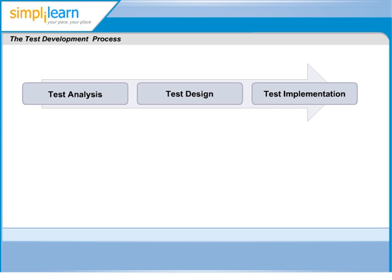Let us take a closer look at what activities are carried out in each phase of the test development process. Test analysis involves defining the test approach and identifying the right test techniques to be used to develop the test cases. These tasks should be conducted keeping in mind the test objectives and the risk associated in testing.